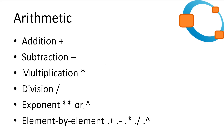Octave implements all of the standard arithmetic operators: addition, subtraction, multiplication, division, and exponent. It also has element-by-element equivalents, which are all preceded with a dot. We will have a look at this later, but for now let's look at the basic arithmetic.